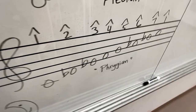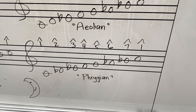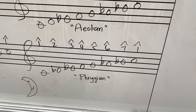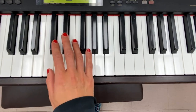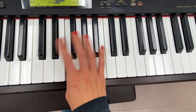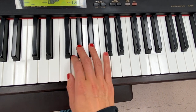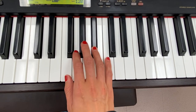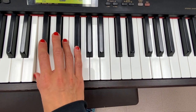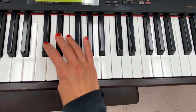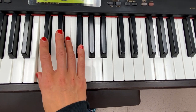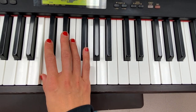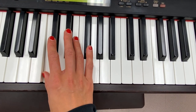Then we have Phrygian, which has lowered second, third, sixth, and seventh degrees. C Phrygian looks like this — lowered second, third, sixth, and seventh. This is one of the more moony, introverted, darker sounding modes.